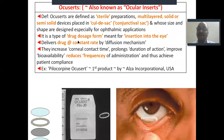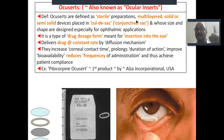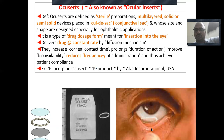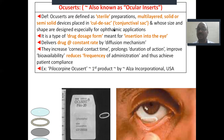Accuserts are also called ocular inserts. They are oval-shaped — you can see the white color ring here. Accuserts are defined as sterile, multi-layer solid or semi-solid devices placed in the cul-de-sac, which is the pouch-like structure you get when you pull the lower eyelid down — also called the conjunctival sac. All sizes and shapes are designed especially for ophthalmic application. It is a dosage form meant for insertion into the eye, designed to release drug at a constant rate.